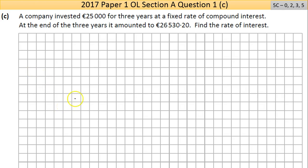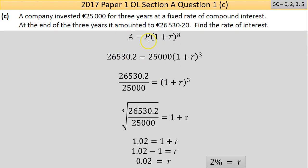Part C is usually the most challenging - it's a 5-mark C question with jumps of 0 to 2 to 3 to 5: low partial 2, high partial 3. A company invested €25,000 for three years at a fixed rate of compound interest. At the end of three years it amounted to €26,530.20. Find the rate of interest. This is not a standard question in the sense that your unknown is on the left and everything else is on the right. You're going to have to either rearrange or deal with the algebra of moving things around the equation.